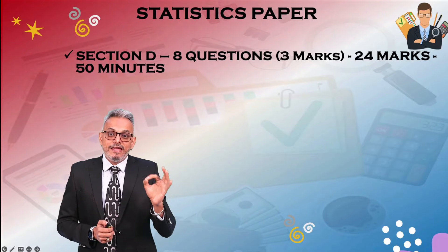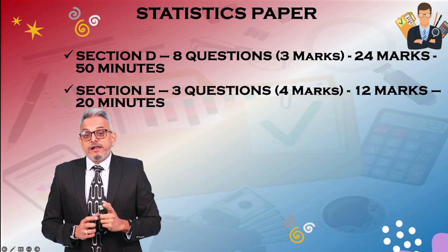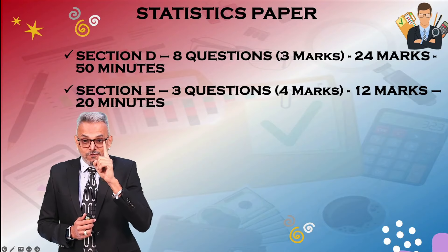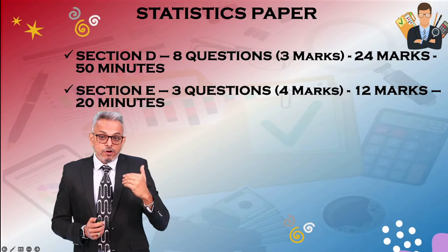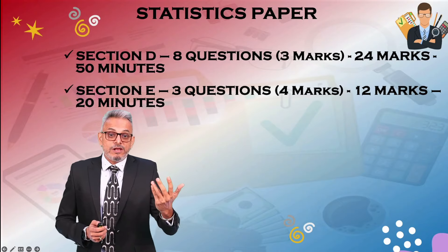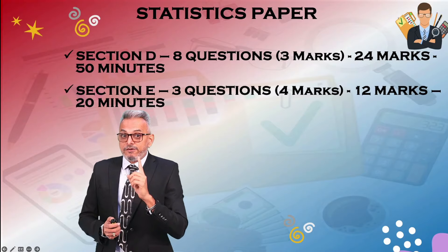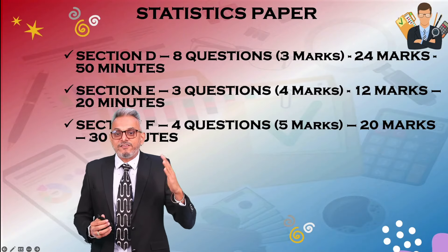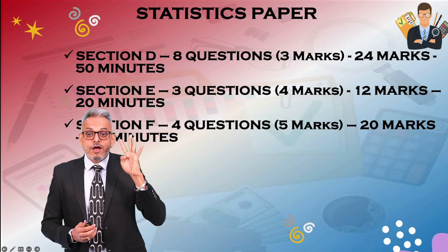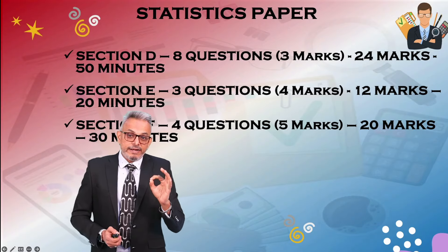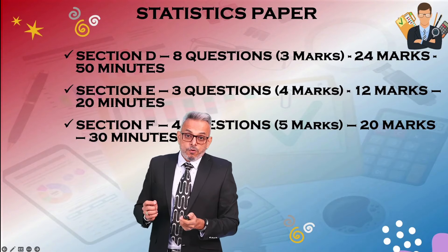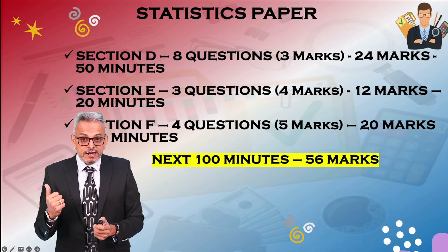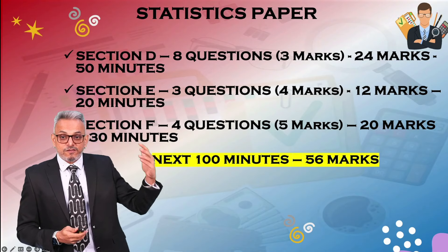Section E has four questions and you need to attempt three — 12 marks — with long calculations, so I am allocating 20 minutes. Section F is the last section with very lengthy five-mark sums; out of six questions you attempt four, and I am allocating 30 minutes. So in total: 60 minutes for 44 marks, then 100 minutes for 56 marks, completing the full 100-mark paper in 160 minutes.